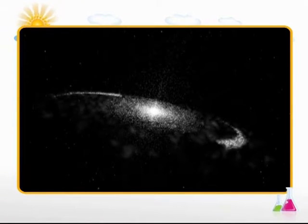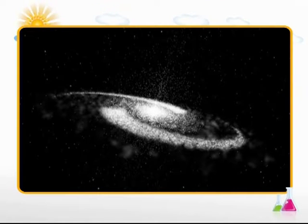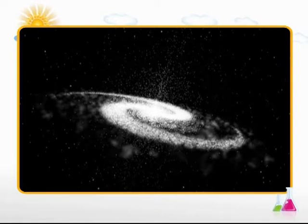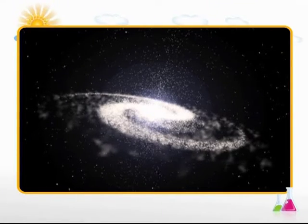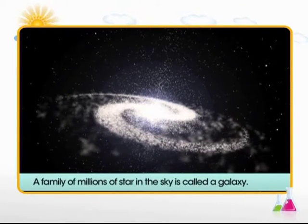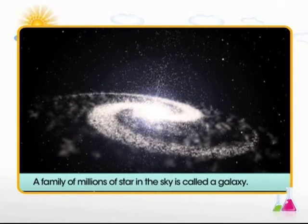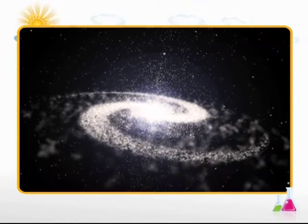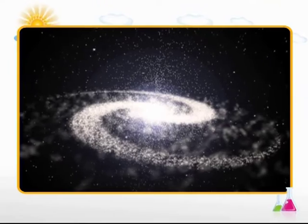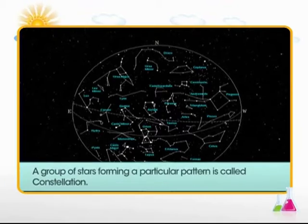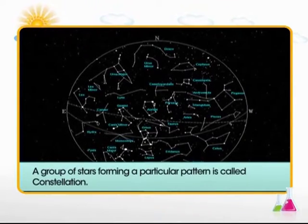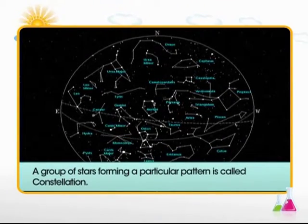Our universe is the vast and infinite space with millions of heavenly bodies which include the galaxies, stars, etc. A family of millions of stars in the sky is called a galaxy. Our solar system belongs to the Milky Way galaxy, Akash Ganga. A group of stars forming a particular pattern is called a constellation.